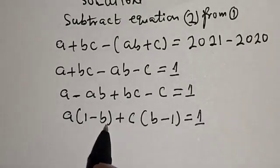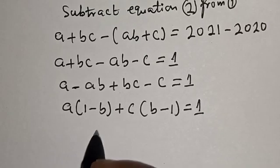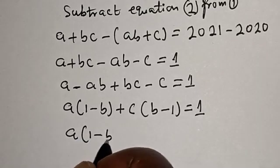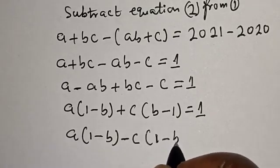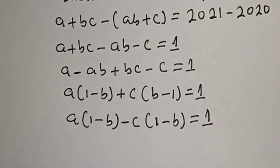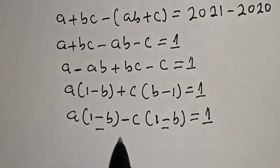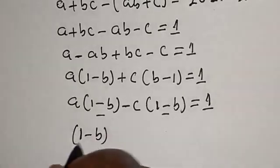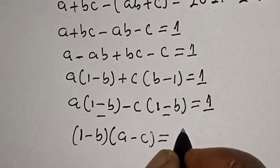Now, this is 1 minus B. In order to transform C(B minus 1) to use (1 minus B), the equation becomes A(1 minus B) minus C(1 minus B) is equal to 1. Then factoring out (1 minus B): (A minus C)(1 minus B) is equal to 1.